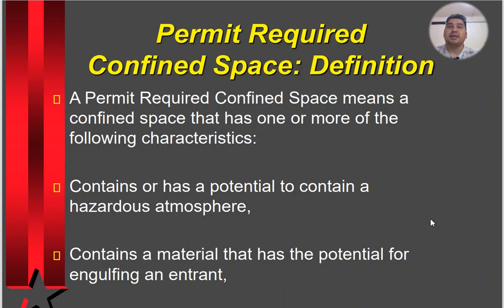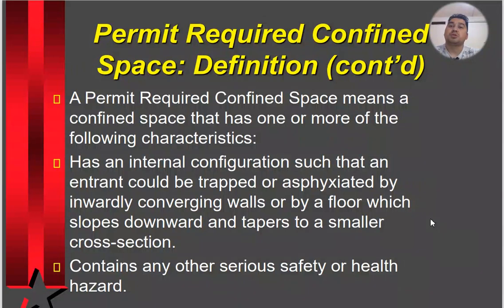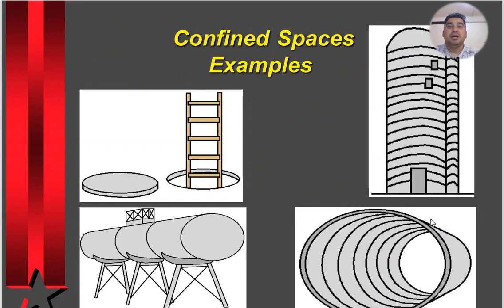A permit-required confined space means a confined space that has one or more of the following characteristics: contains or has the potential to contain a hazardous atmosphere; contains a material that has the potential for engulfing an entrant; has an internal configuration such that an entrant could be trapped or asphyxiated by inwardly converging walls or by a floor which slopes downward and tapers to a smaller cross-section; or contains any other serious safety or health hazards.